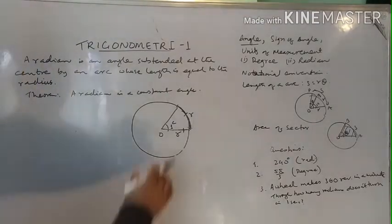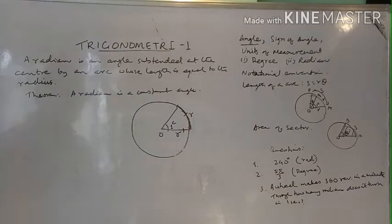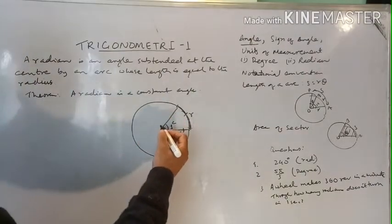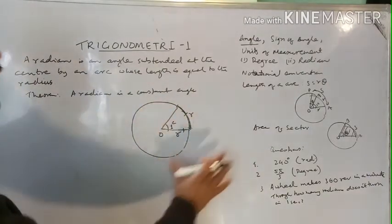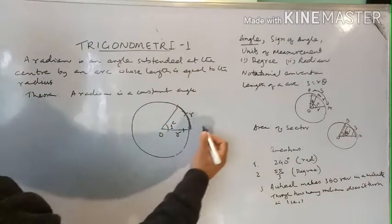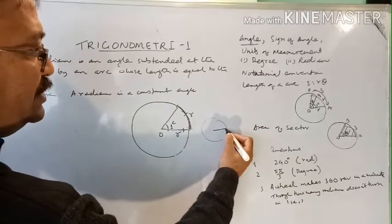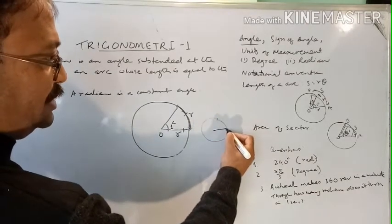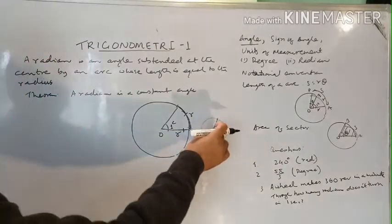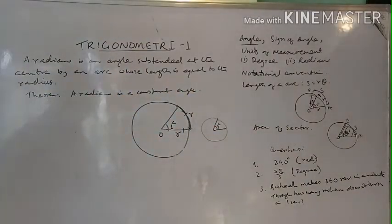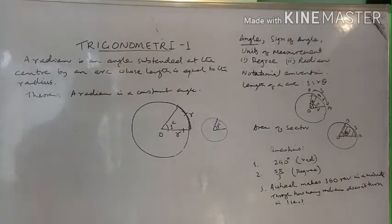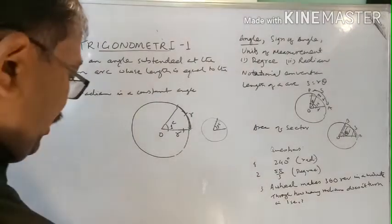A radian is a constant angle. Whatever the length of radius you take — whether you take a bigger circle or a smaller circle — this angle is always fixed. Even with a small circle, if you take the arc equal to the radius, the angle is still one radian. So this angle is free of the size of the circle. No matter what size circle you take, one radian is the same constant angle. This can be proved with the help of a diagram.